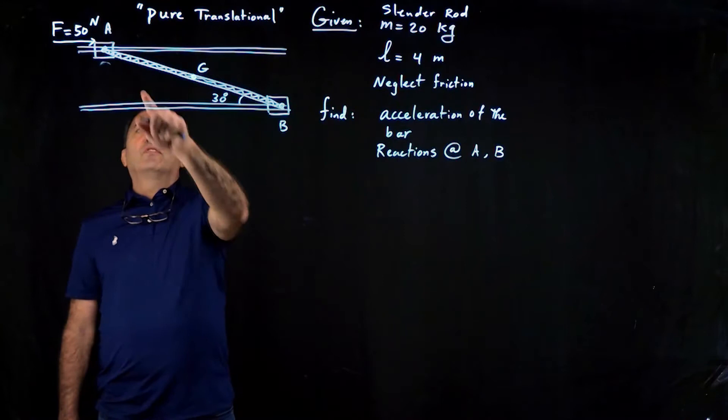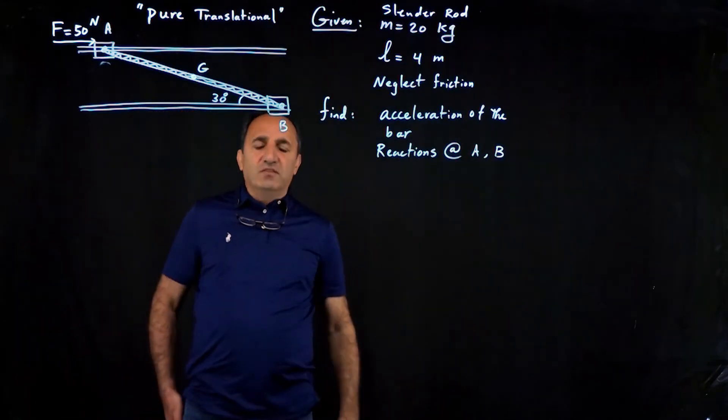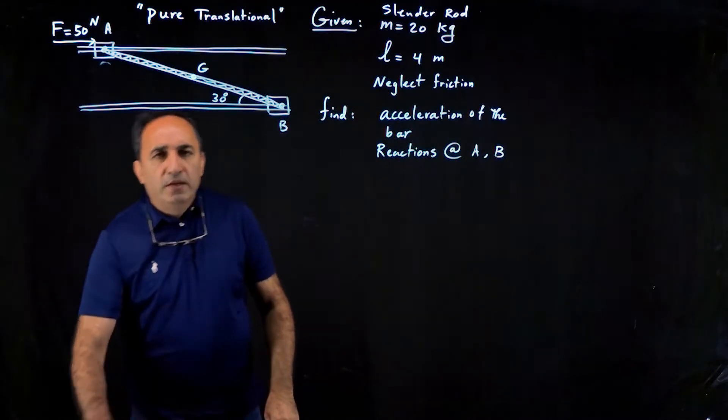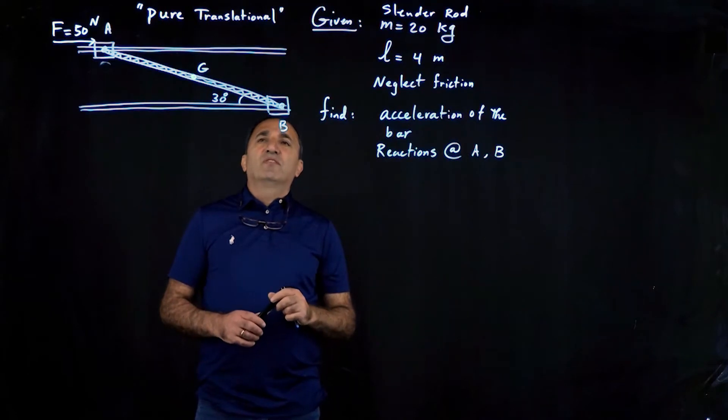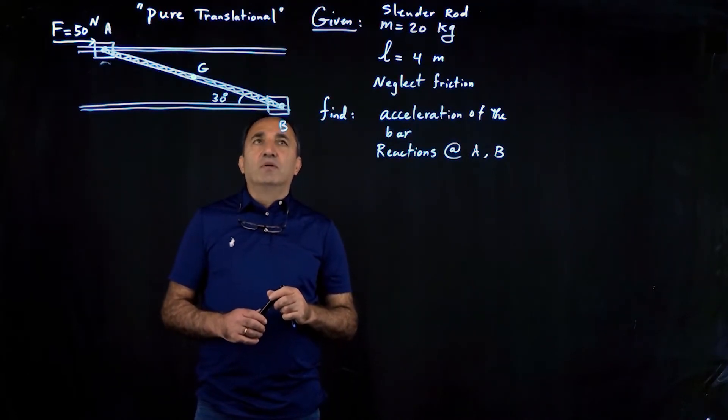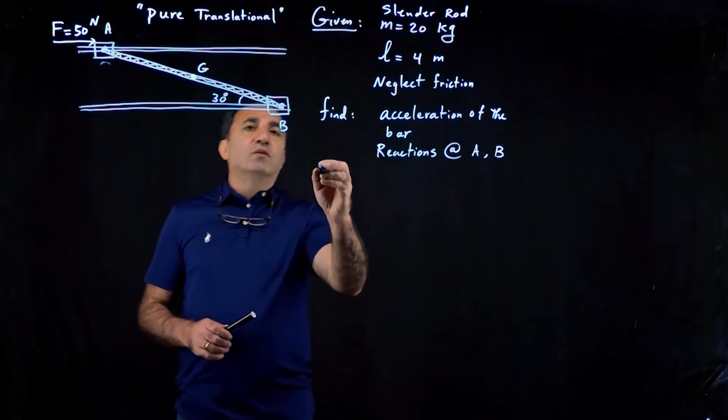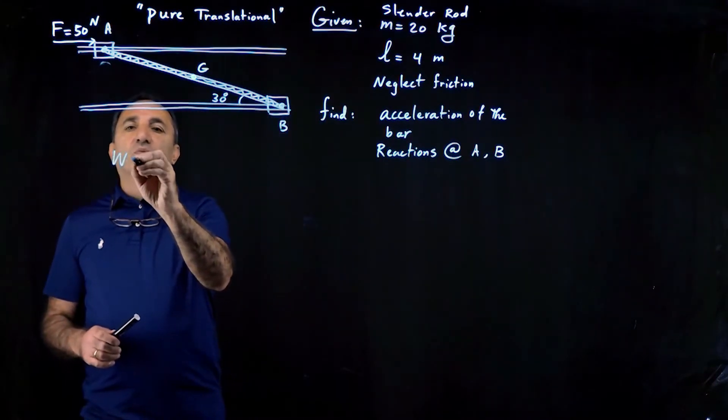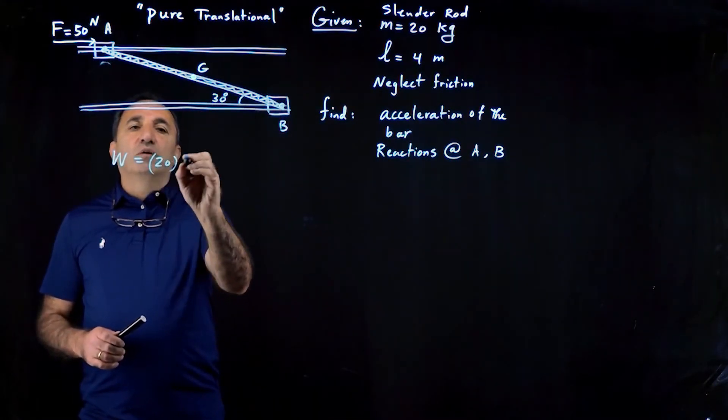So a 50 Newton force is applied. Finding acceleration, this is really a trivial problem. Like any kinetic problems, the first thing you have to do is to draw a free body diagram. So we're going to start with the weight. The weight is 20 kilograms times 9.81.